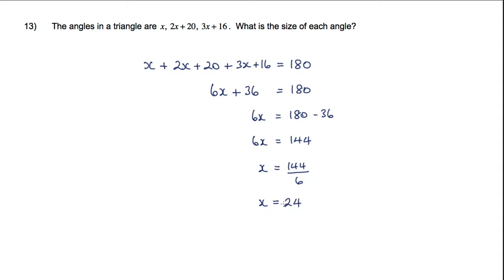Now once I found one angle I know that this first angle here is 24, but I now need to put that value in for the following two angles. So one angle is 24. The other angle is 2x plus 20, and when x equals 24 we get 2 times 24 plus 20, which is 68. The third angle is 3x plus 16, and when x equals 24 we get 3 times 24 plus 16, and 3 times 24 is 72, so we've got 72 plus 16 and that is equal to 88 degrees.